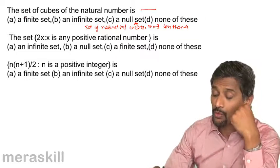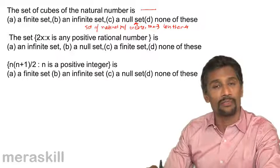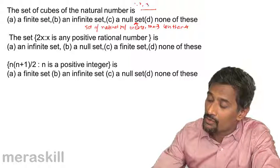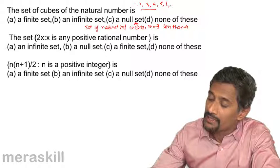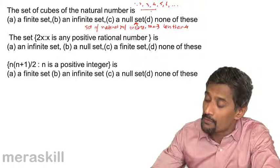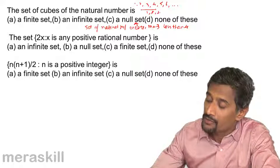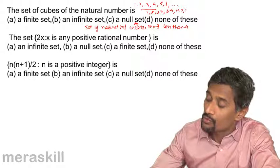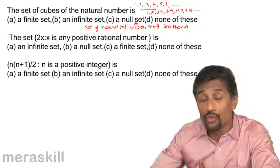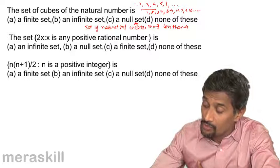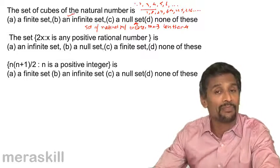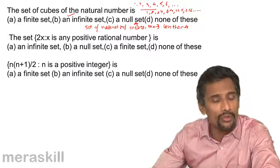Consider the set of cubes of natural numbers. Natural numbers are 1, 2, 3, 4, 5, 6, and so on. Their cubes are 1, 8, 27, 64, 125, 216, and so on. The set containing these cubes is an infinite set because the listing never stops — it goes on and on.